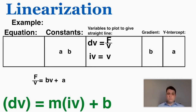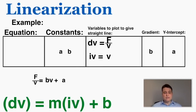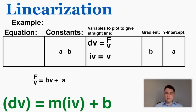Some students get a little confused and say, how is it that you can graph both variables on one axis — we have both f and v on one axis. That's entirely fair game. It doesn't matter exactly which variables you put where. All that matters is that there are only variables in the dv and iv section and only constants in the m and b section. If you're obeying that rule, you can linearize the function, and you can get a little creative with it like we did here.